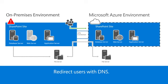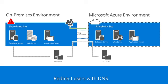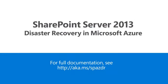And finally, point your DNS entries to Azure, which redirects users to the newly restored SharePoint site. At this point, your users can continue to work while you resolve the original problem in the on-premises environment. You can reverse this process to switch back to on-premises at your convenience. For the full details about this Azure-based SharePoint disaster recovery configuration, see aka.ms/spazdr.